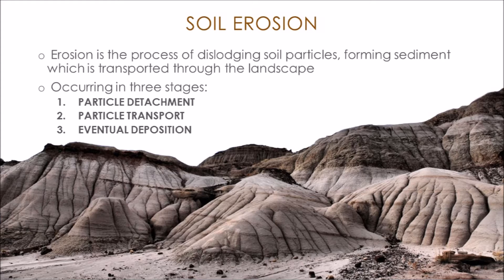Erosion is a process of dislodging soil particles, forming sediment which is transported throughout the landscape. This process is broken up into three stages: particle detachment, particle transport, and eventual deposition.